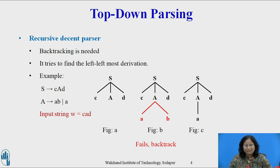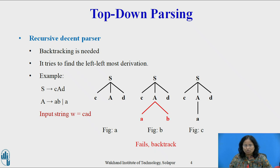We consider the next leaf labeled A and expand A using the first alternative to obtain the tree of figure B. We now have a match for the second input symbol, so we advance the input pointer to d, the third symbol. We compare d against the next leaf labeled b. Since b does not match d, we report failure and go back to A to try another alternative. We now try the second alternative for A to obtain figure C. The leaf a matches the second symbol of W and leaf d matches the third symbol. Since we have produced a parse tree for W, we halt and announce successful completion of parsing.